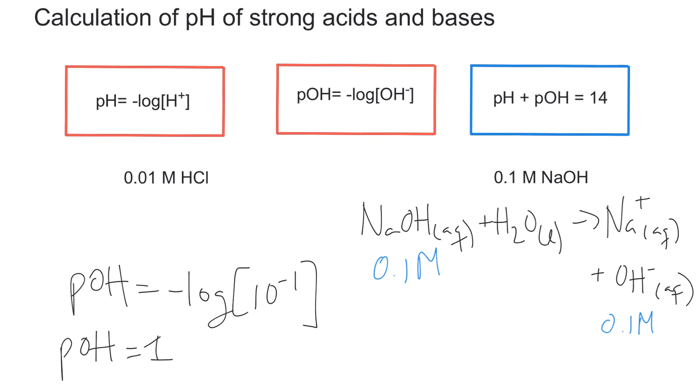Now that we have the pOH, you want to subtract 14 minus the 1 to get the pH. So the pH would be equal to 13. And that tells you that NaOH is a very strong base.